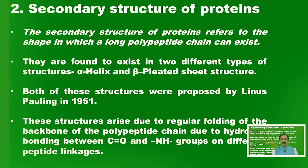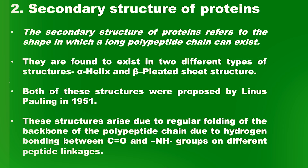The secondary structure of proteins is found to exist in two different types. One is called the alpha helical structure — alpha helix — and the other is called the beta pleated sheet structure.